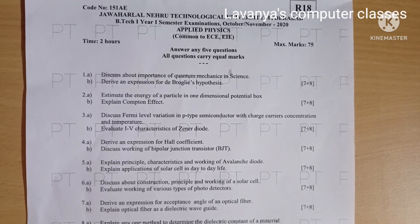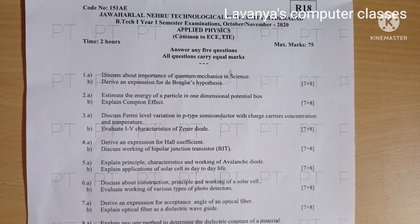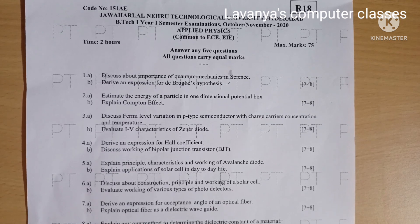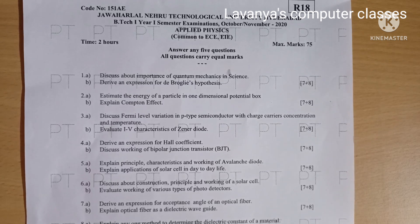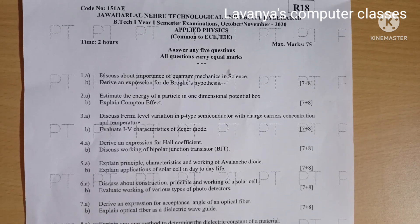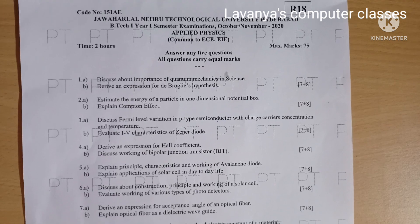Question 8a: Explain any one method to determine the dielectric constant of a material, for 6 marks. Question 8b: Discuss electric current and continuity equations, for 9 marks.